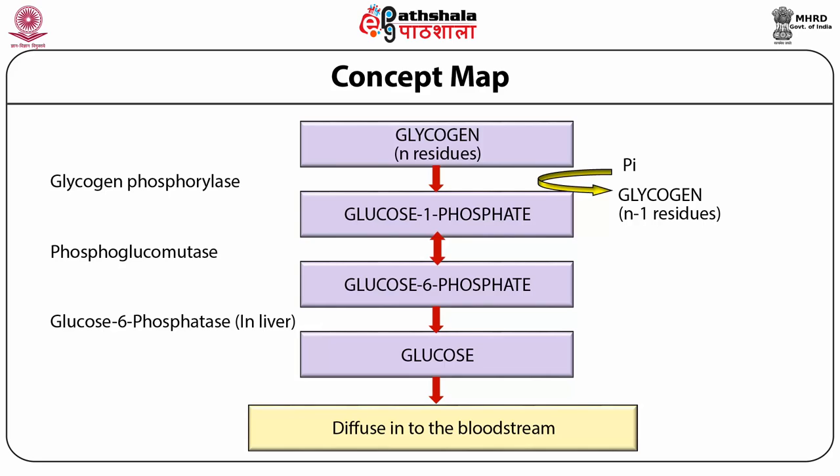Glycogen is present in the cytoplasm in the form of granules, which contain various enzymes and regulatory proteins for both its synthesis and degradation. Glycogen is an important stored form of energy in the body. The liver and skeletal tissues are the prime locations where abundant glycogen is stored. Glycogen stored in skeletal muscle tissue is available only for muscular activities, while liver glycogen supplies energy for the rest of the body.